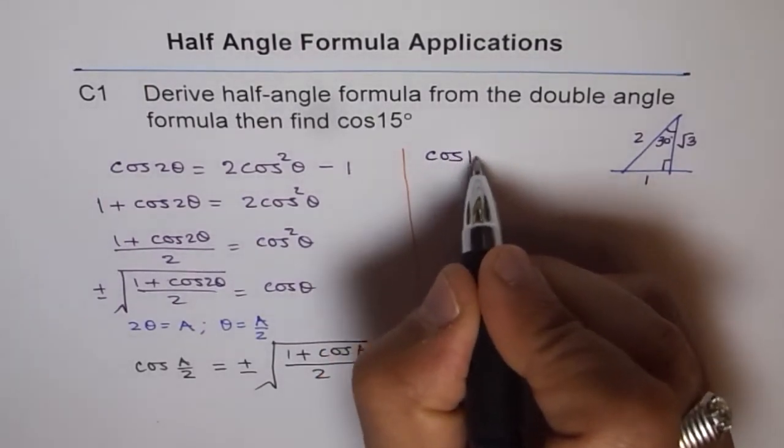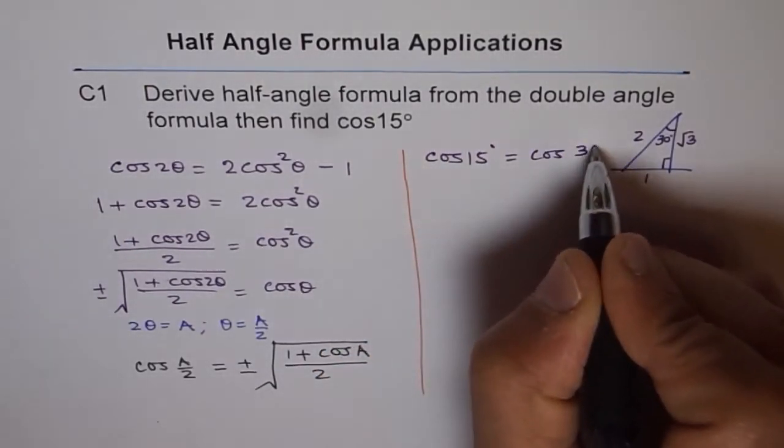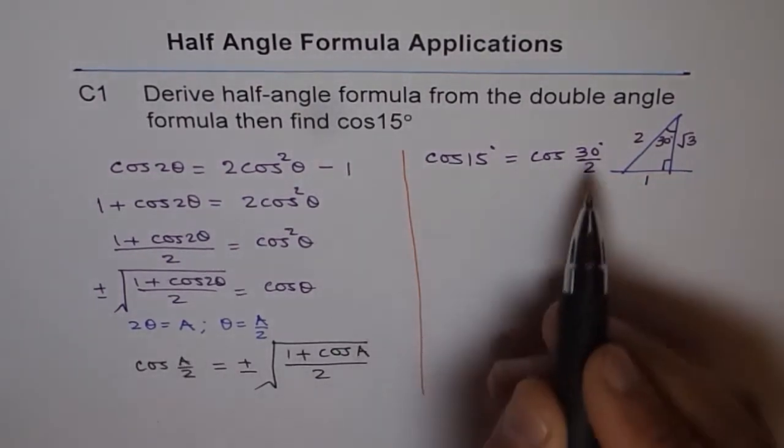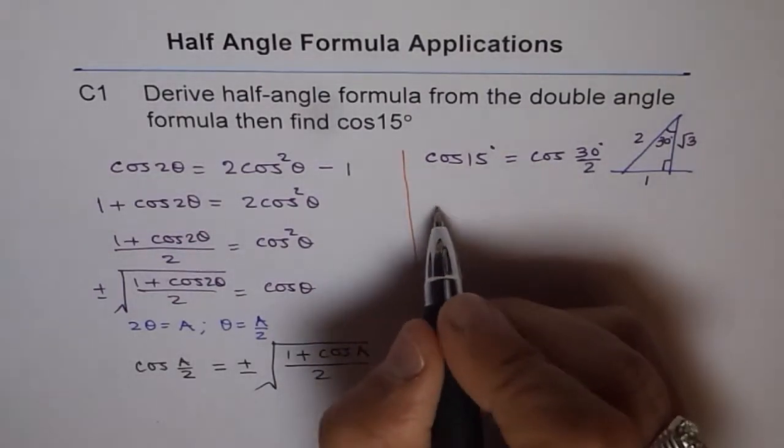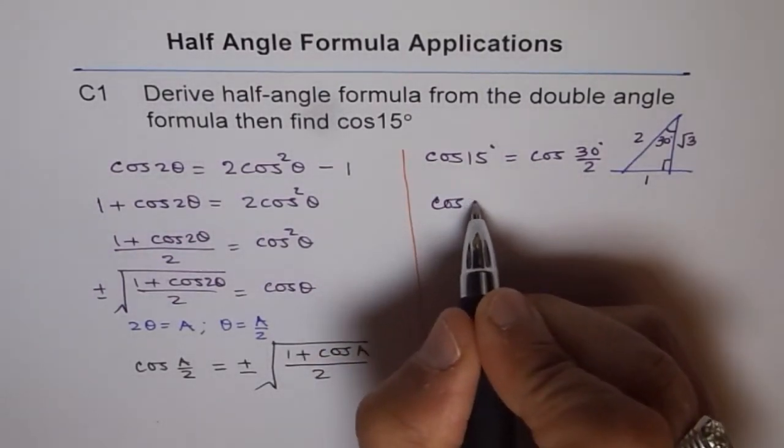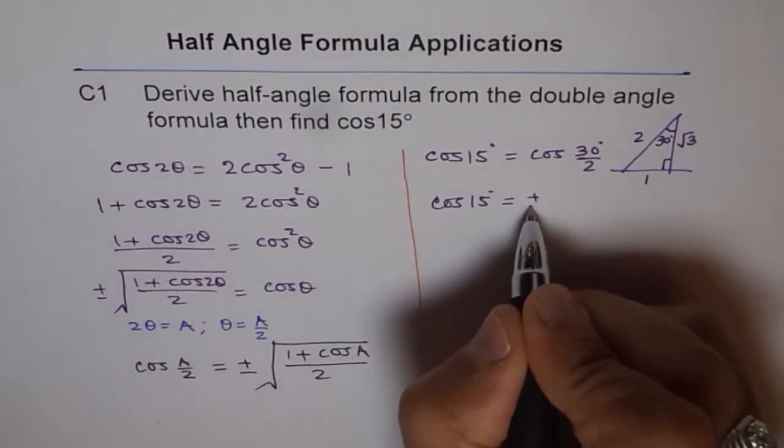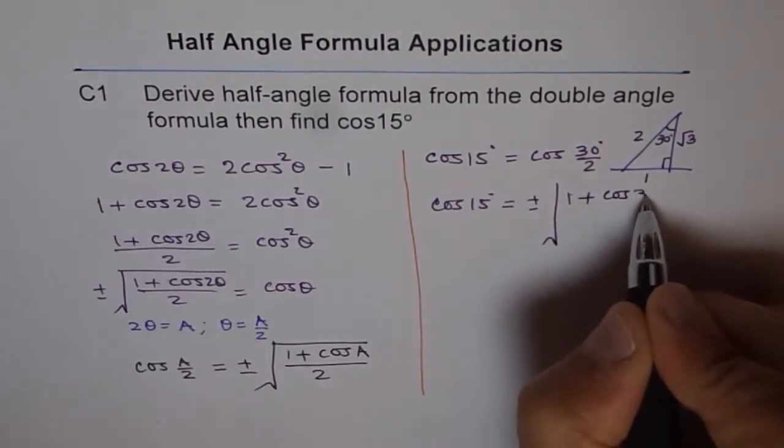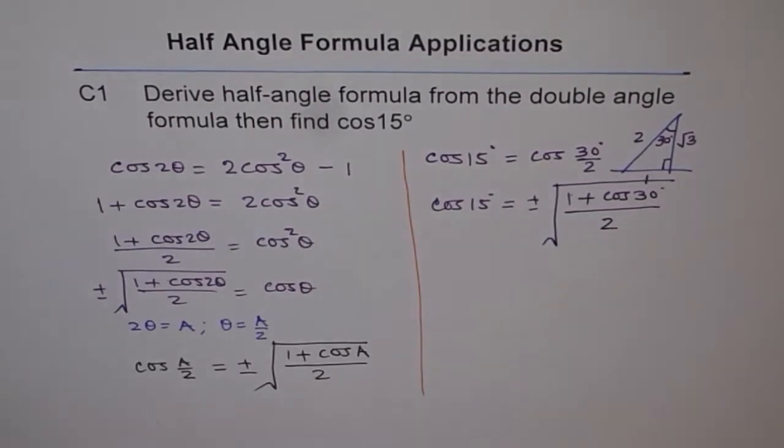Cos 15° equals to cos of 30° divided by 2. So instead of a, we will write 30. 30 divided by 2 is 15. So we can see here cos 15° is therefore equal to ±√[(1 + cos 30°)/2], divide by 2.